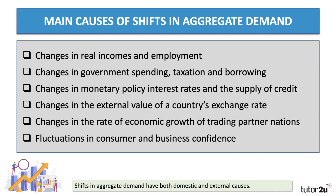The government can impact aggregate demand directly through its own spending and how much it chooses to borrow, but also through the level of taxes — both direct and indirect — imposed on households and businesses. So government spending, taxation, and borrowing, otherwise known as fiscal policy, can have quite a sizeable impact on aggregate demand.